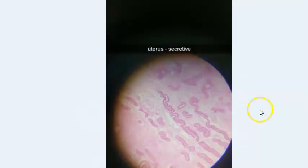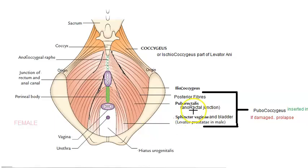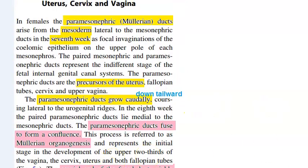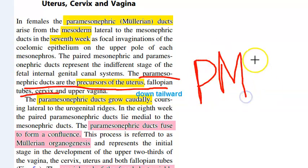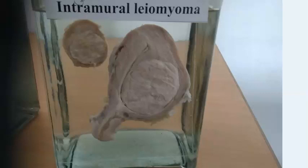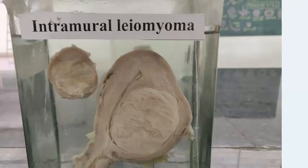In the secretory phase you can see tortuous glands and arteries. The levator ani is a very important support for the uterus - remember round ligament, levator ani, etc. Regarding embryology, it is the paramesonephric duct from which the uterus comes. From the paramesonephric ducts you will get the uterus, fallopian tubes, cervix, and upper part of the vagina.